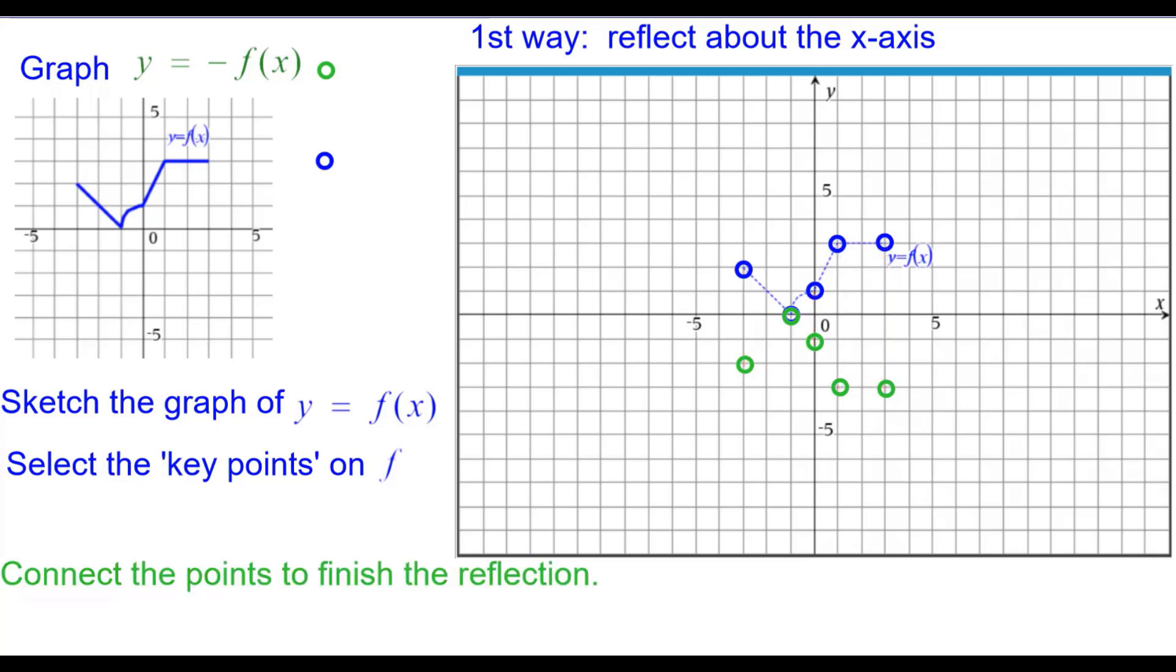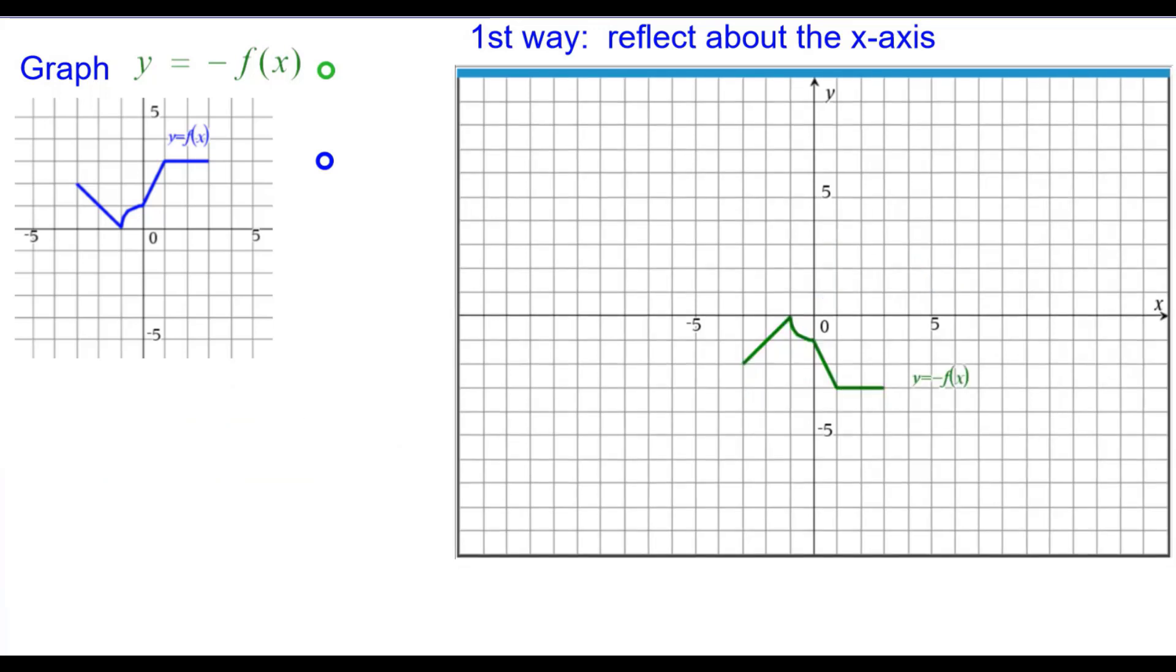So we're going to connect the points to finish the reflection. Make sure you have straight lines but this is kind of an arc right here, so we have to make sure it's like that. So draw that in the best we can. And so here's the graph of y equals the opposite of f of x.